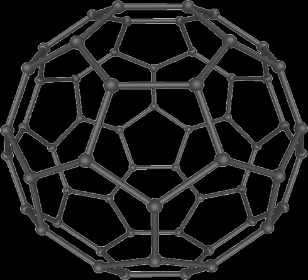Second, fullerenes were discovered in 1985 by Harry Kroto, Richard Smalley, and Robert Curl, who together won the 1996 Nobel Prize in Chemistry. C60 was not initially described as nanotechnology. The term was used regarding subsequent work with related graphene tubes, called carbon nanotubes and sometimes called bucky tubes, which suggested potential applications for nanoscale electronics and devices.